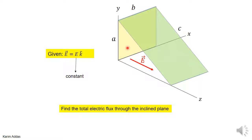If you think about the problem from the point of view of electric field lines, any electric field line that goes through this inclined surface will also have to go through the back surface, because we constructed the inclined surface to project back onto the original one.